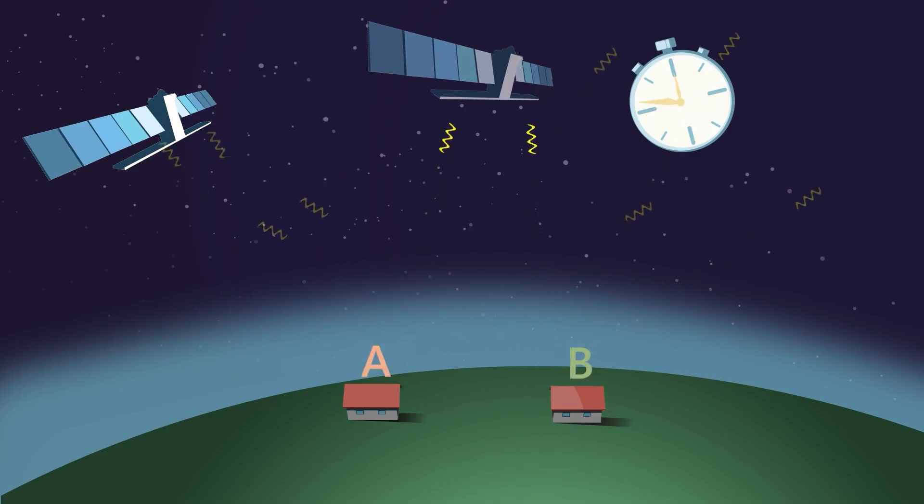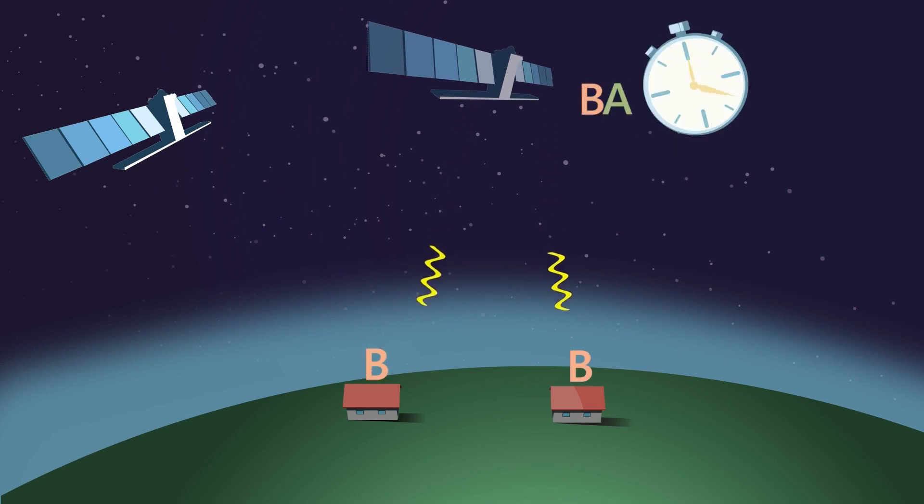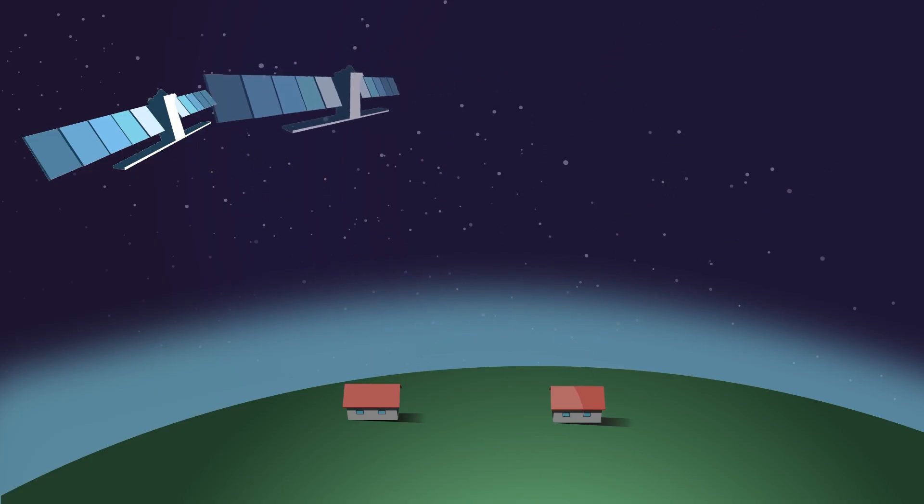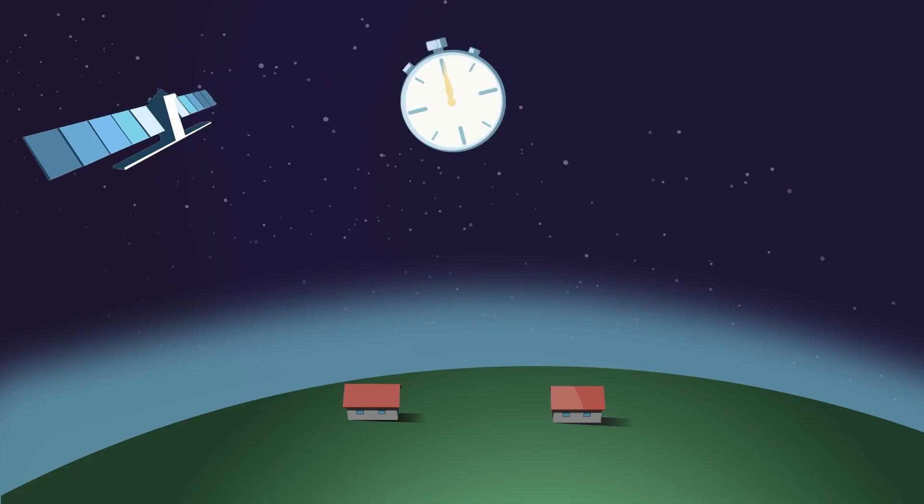If this were not the case, the signal from some points on the Earth's surface would take the same time to reach the sensor, and they could not be spatially separated from each other. The lateral angle ensures that each signal takes a different amount of time to return to the sensor and thus can be clearly assigned to a position relative to the satellite.